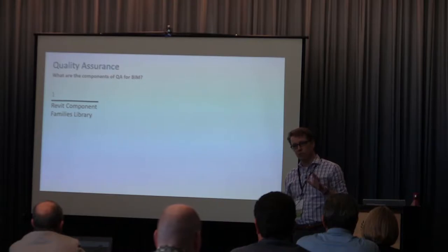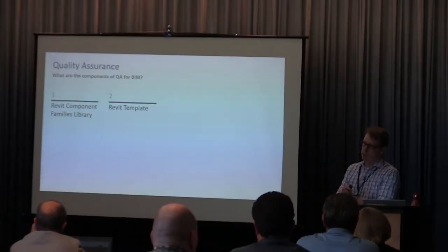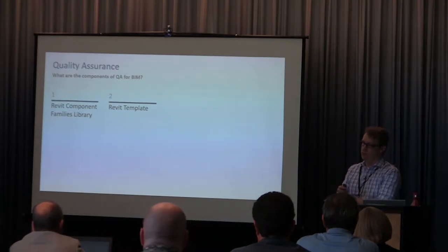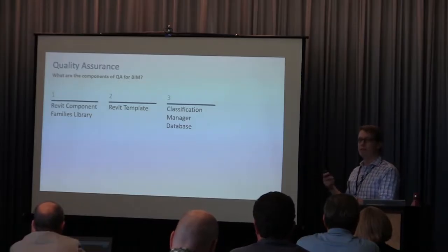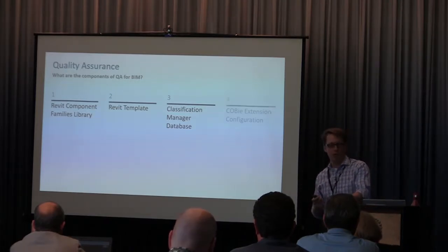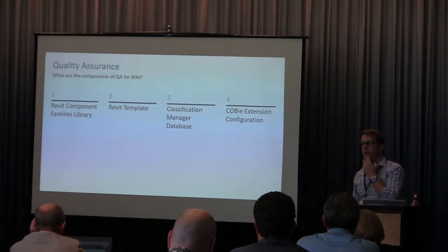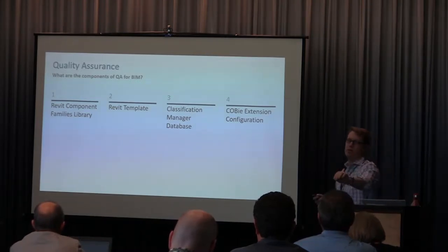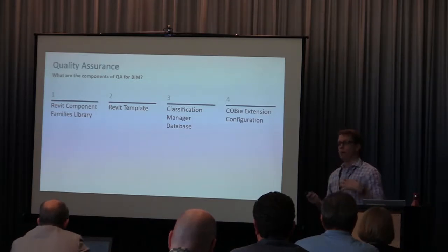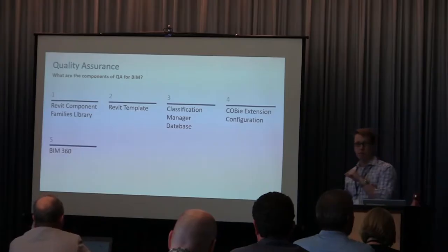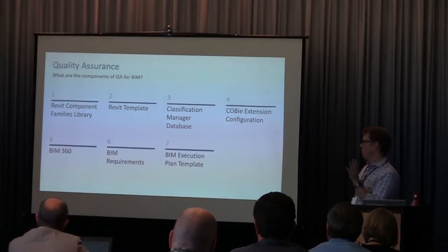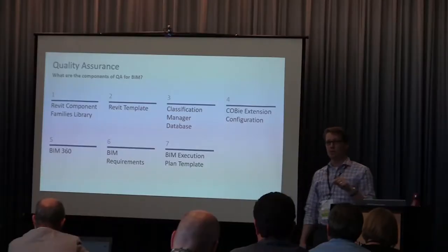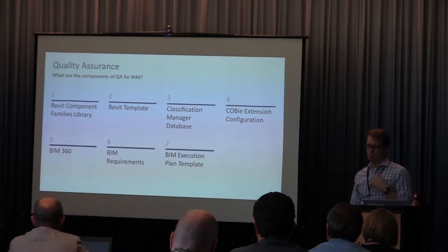These are the seven items I'm going to talk about today: component families, Revit templates, classification manager databases, COBie extension configuration, BIM 360, BIM requirements, and a BIM execution plan. For each one, I'll share best practices and tips we've learned over the years building these for owners — not just 'give them a Revit template' because there are problems with that approach.